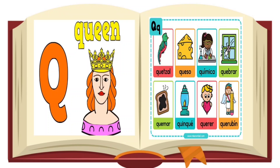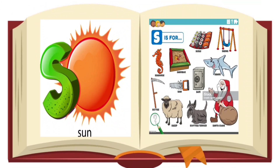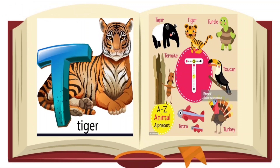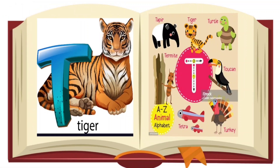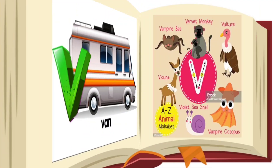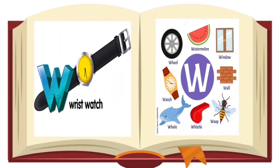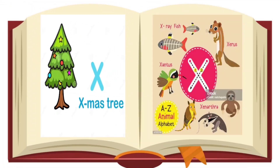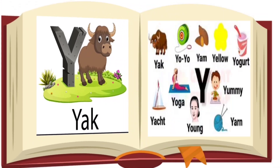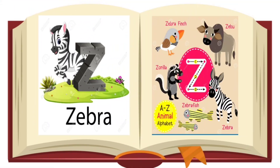Q for quilt. R for rabbit, R for rose. S for sun, S for ship. T for tiger, T for token. U for umbrella, U for van. V for vulture. W for watch, W for window. X for xylophone. Y for yak, Y for yellow. Z for zebra.